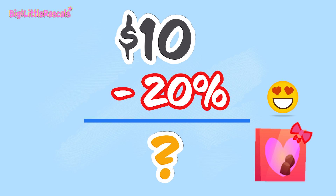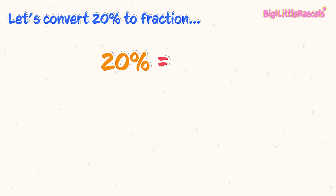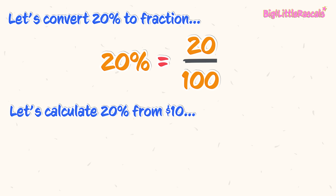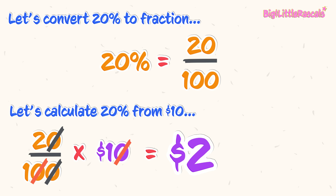let's calculate 20% of $10. 20% as a fraction is 20 out of 100. So we need to calculate 20 over 100 times $10. To make things simpler, we cross out the same zeros from the top and bottom numbers. After crossing out all the zeros, it leaves us with $2. So 20% of $10 is $2.